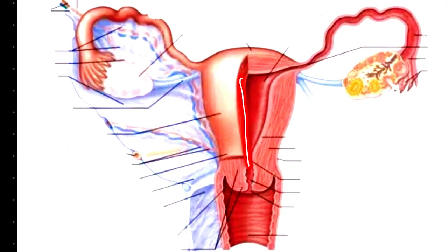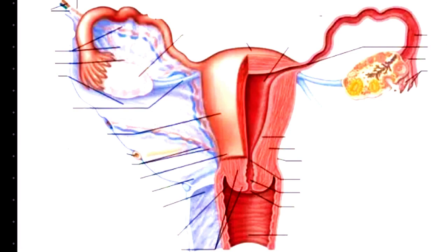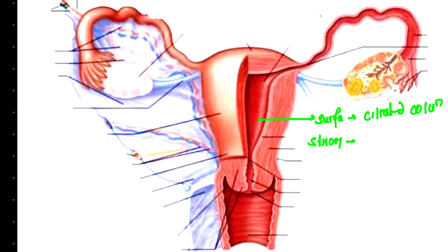The uterus consists of columnar epithelium, but there is a difference between the surface and the stroma of the uterus. On the surface, it consists of ciliated columnar epithelium. As we go into the stroma, it consists of simple columnar epithelium.